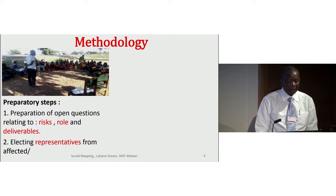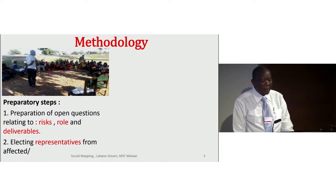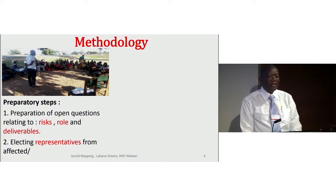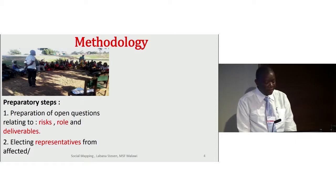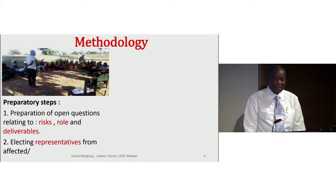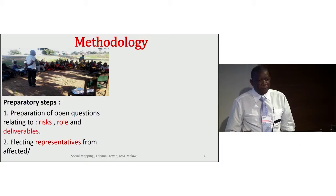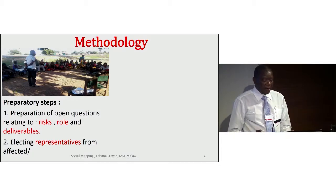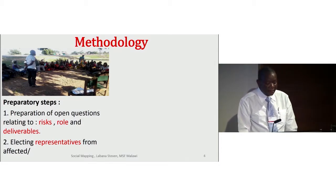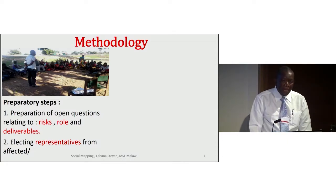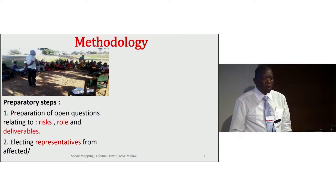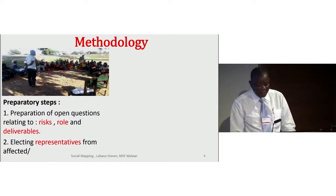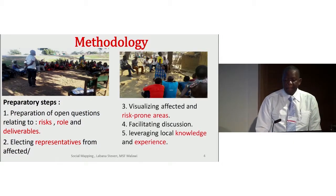How did we do it? Mostly, as a facilitator, you are supposed to prepare questions that should help to identify the risks, the roles, and the expected deliverables — from the beneficiaries and also from you as a partner. After that, you elect representatives. They can be male only, women only, or men and women, depending on the context of what you want to discover in the area.